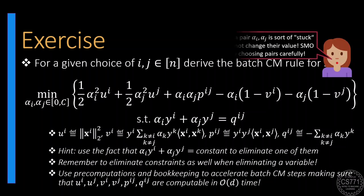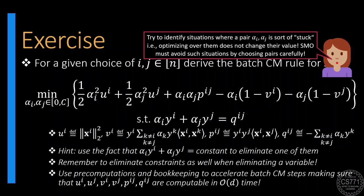Try to identify situations where a chosen pair is useless in the sense that performing optimization over the chosen pair does not change their values at all. SMO needs to avoid choosing such pairs since they just waste time without making any progress.